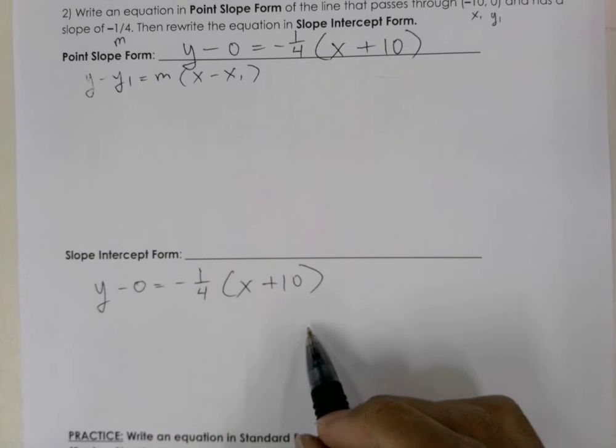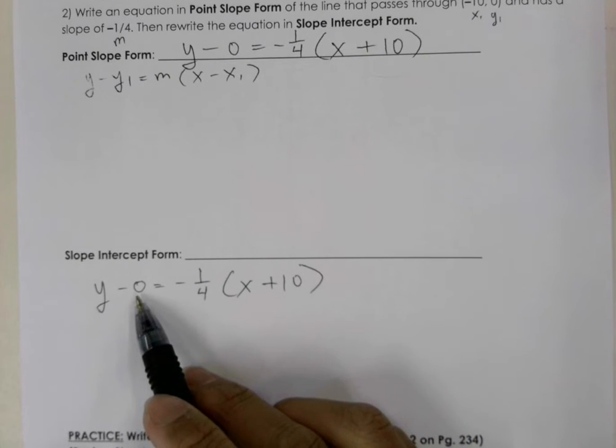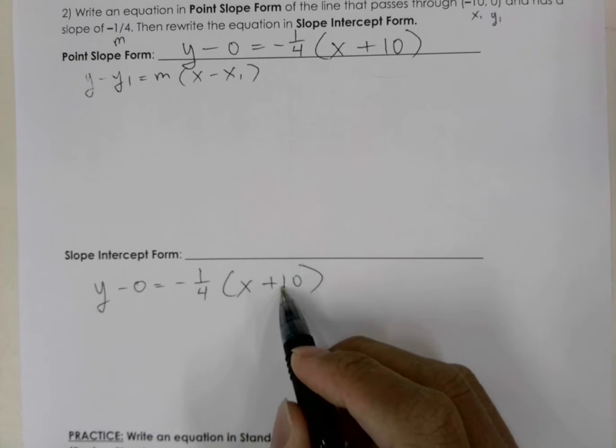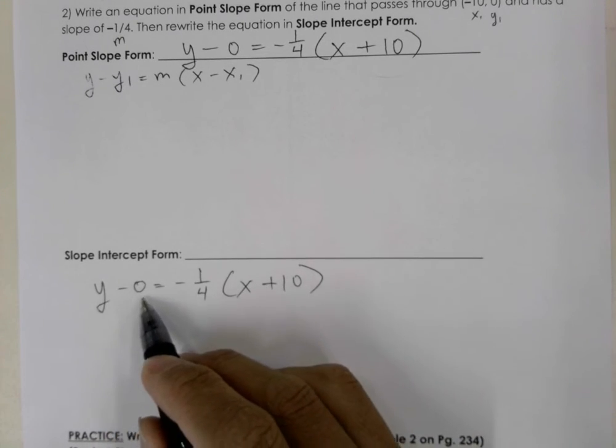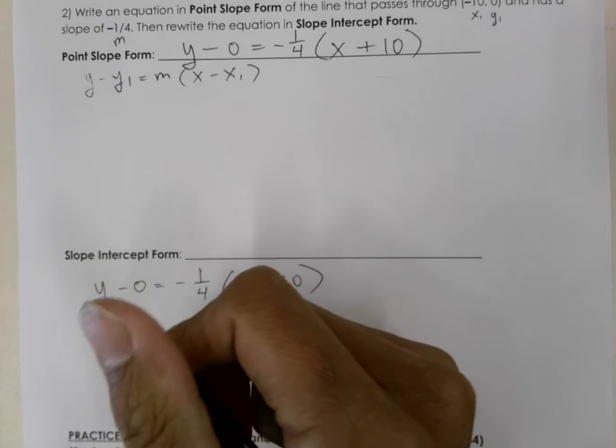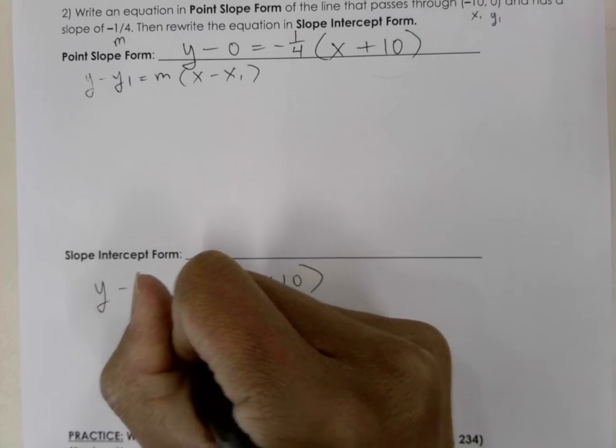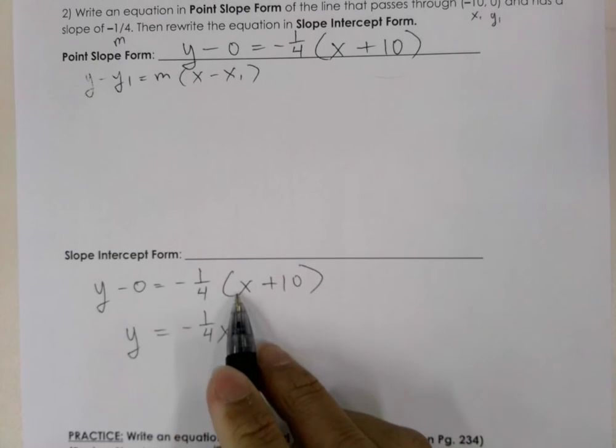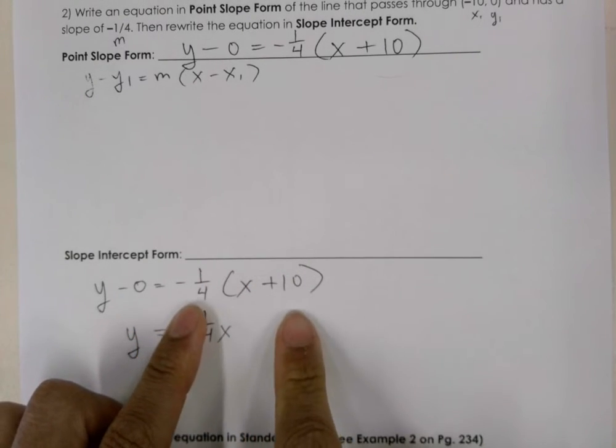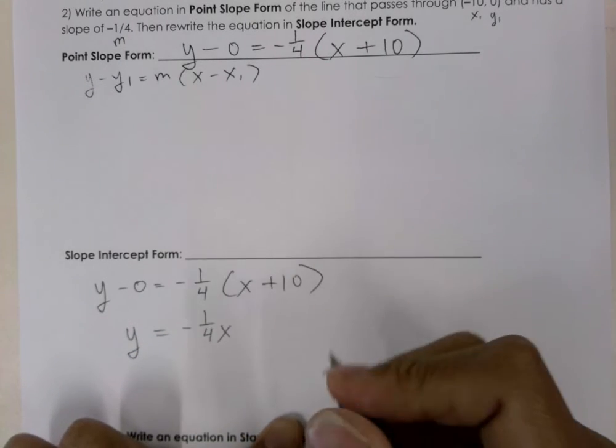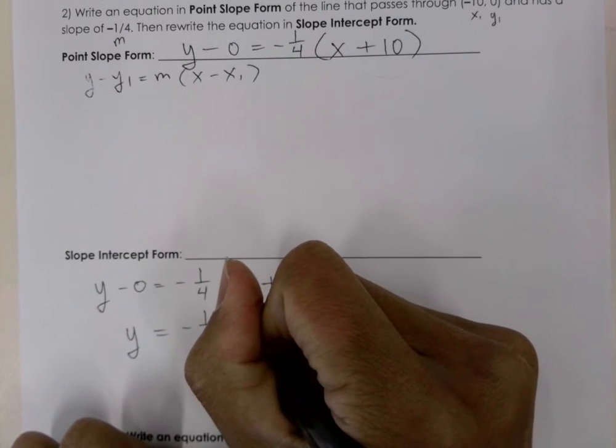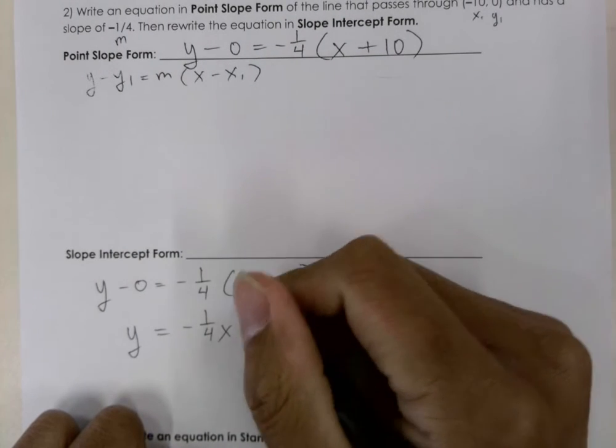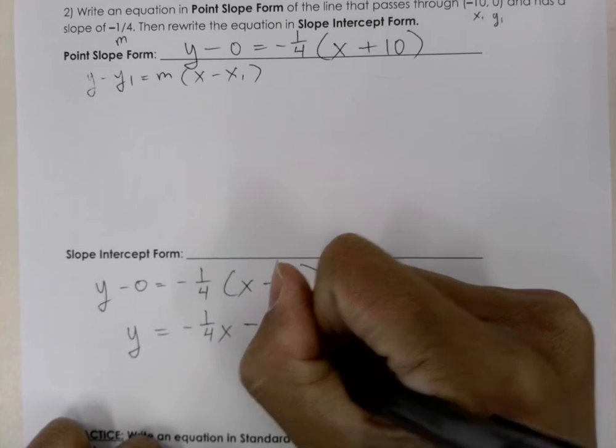And so what we want to do is go ahead and distribute out the negative 1 fourth. And then also subtract the 0 from y. So let's go ahead and rewrite it as y is equal to negative 1 over 4x. And then we're going to multiply these two because we're distributing out the negative 1 fourth. So that's going to become negative because we have a negative times a positive. And we get 10 over 4.